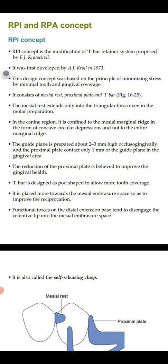The mesial rest extends only in the triangular fossa, even in the molar preparation, because this concept is based on the principle of minimizing stress by minimal tooth coverage. In the canine region, it is confined to the mesial marginal ridge in the form of a concave circular depression, and not to the entire marginal region. The guide plane is prepared 2 to 3 mm high occlusogingivally, and the proximal plate contacts only 1 mm of the guide plane in the gingival region.